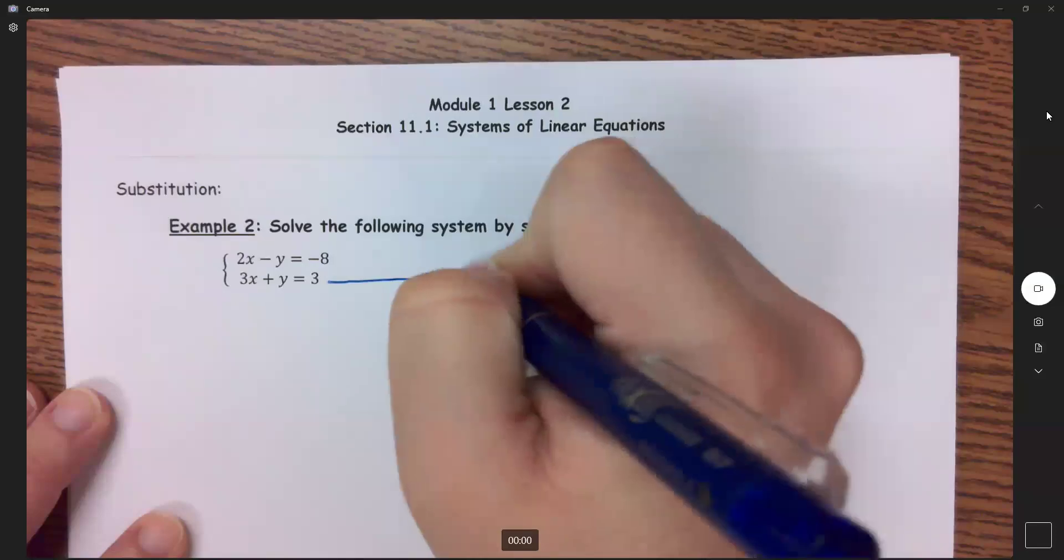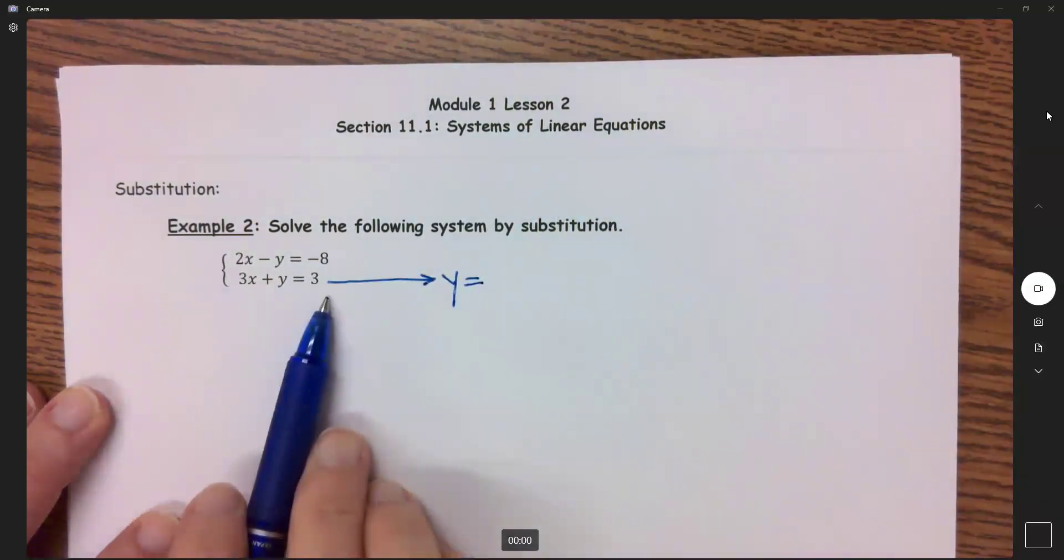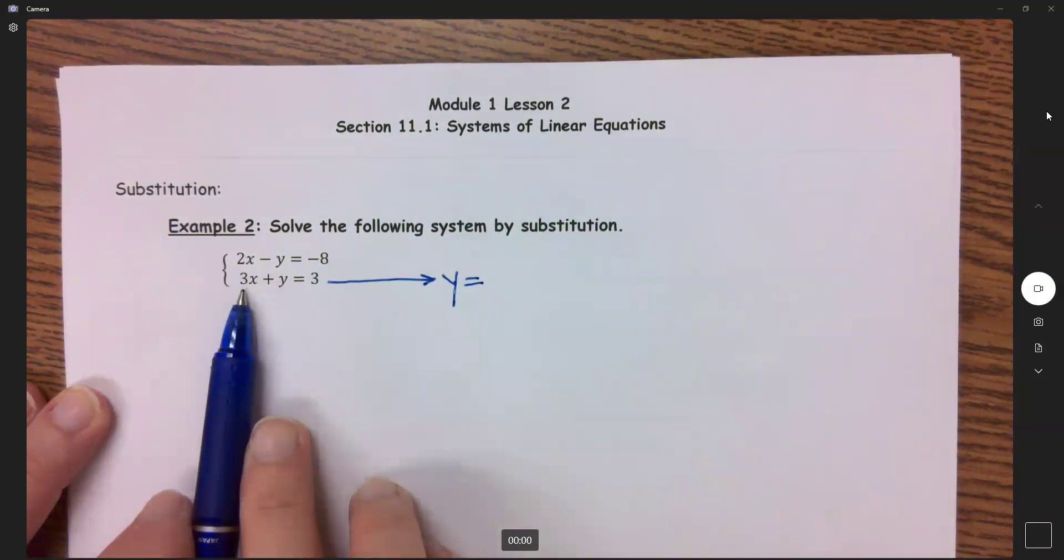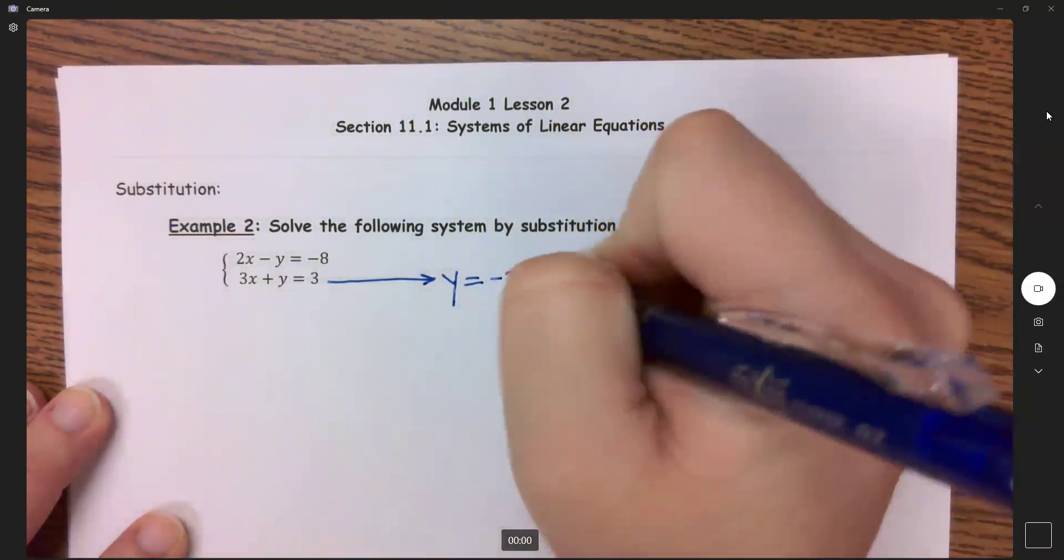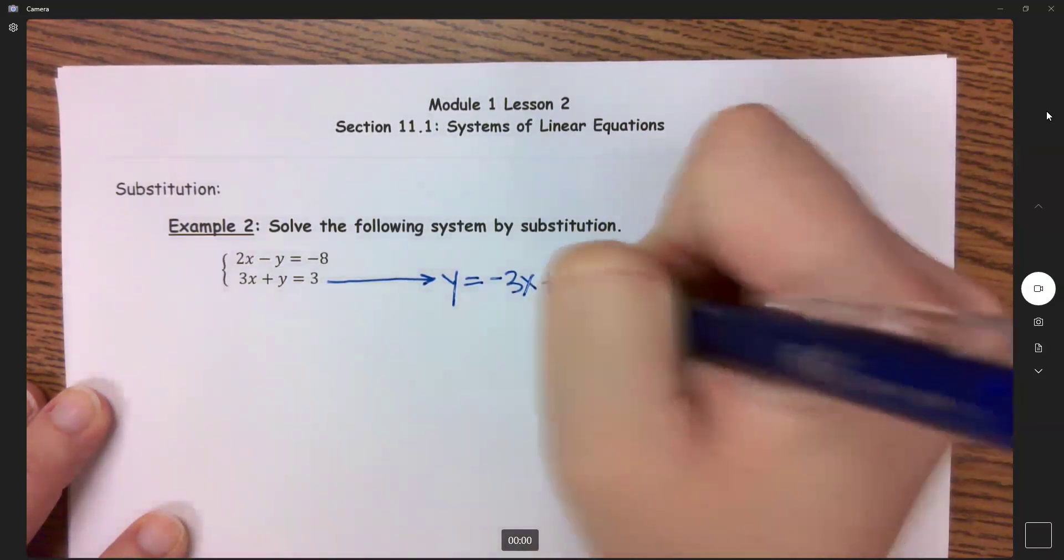So to get y by itself I would have to move this 3x over and the opposite of a positive 3x is a negative. So this would be the same as negative 3x plus 3.